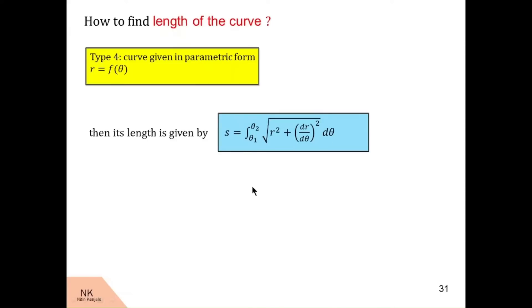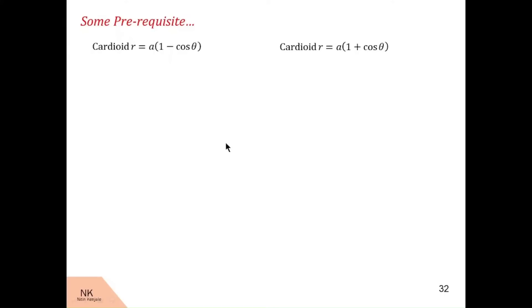Now before proceeding for the examples, I would like to discuss a shape called as cardioid. Cardioid comes in four equations, namely r is equal to a into 1 minus cos theta, a into 1 plus cos theta, a into 1 minus sin theta, and a into 1 plus sin theta.